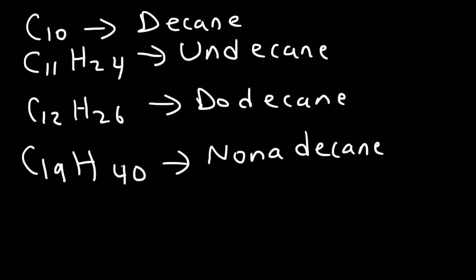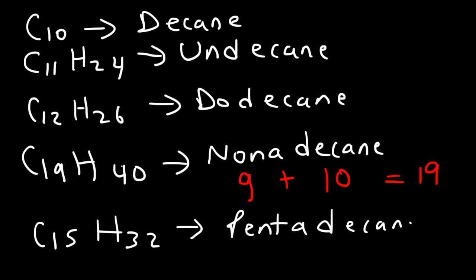So you can see a pattern. If you think about it, nona is 9, decane is 10. If you add it, you get 19. So going back to C15H32, we said that was pentadecane. So penta, we know, it symbolizes 5, decane is 10. 5 plus 10 will give you 15. And the last one, C20H42, this is called icosane. And I got no tricks for you for that one.